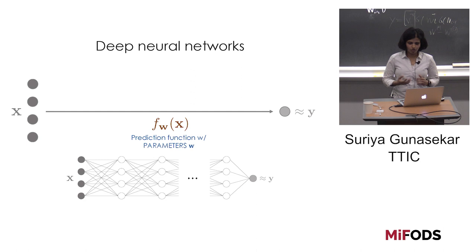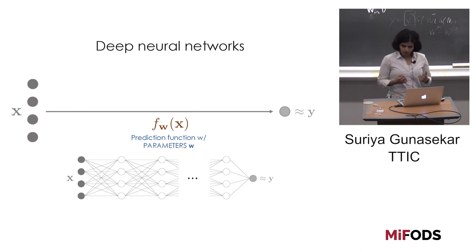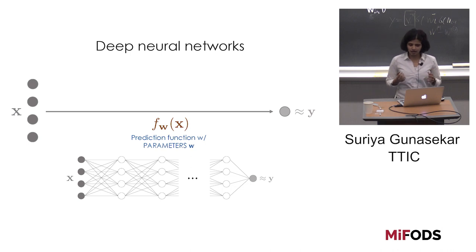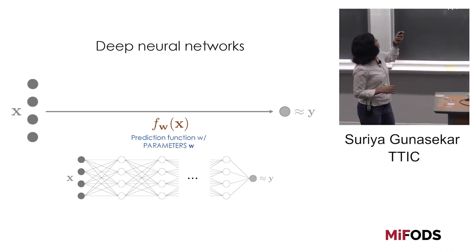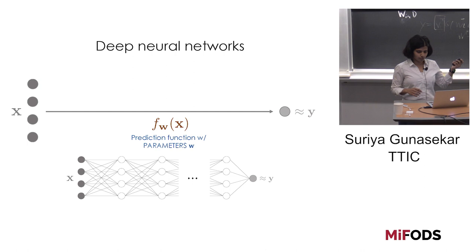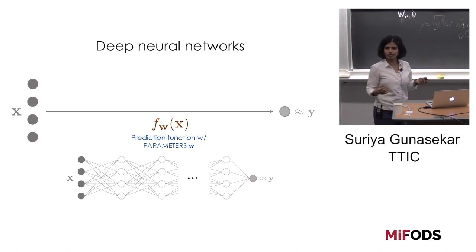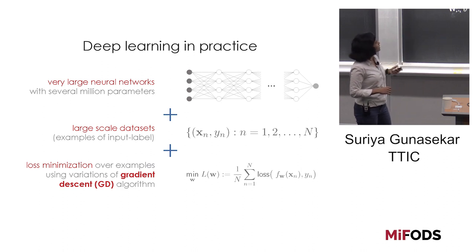The motivating goal for this line of work is to understand learning in deep neural networks. Specifically, we want to understand what is the true inductive bias that drives generalization in deep learning, which is observed in practice. Deep neural networks are simply a specific way of parameterizing a prediction function that maps inputs to some labels. We'll be denoting the parameters of a prediction function using W.